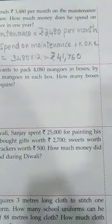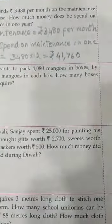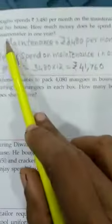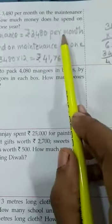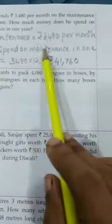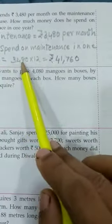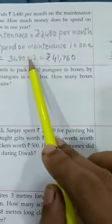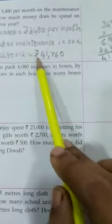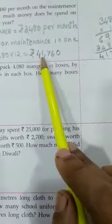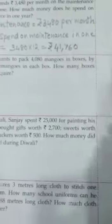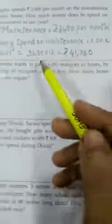So, what did we do? First, they have given the maintenance for one month. Then, you had to find the maintenance in one year, which means per month maintenance into 12. So, you did the multiplication here and wrote the final answer here. This is the final answer.